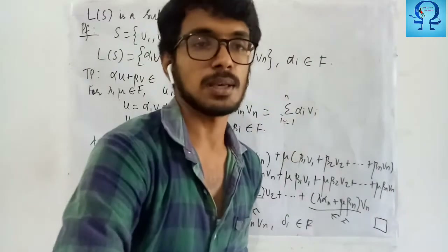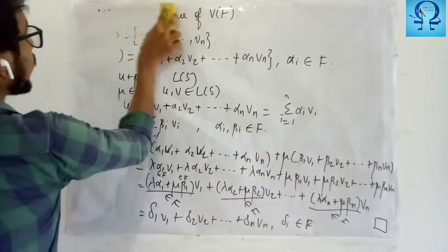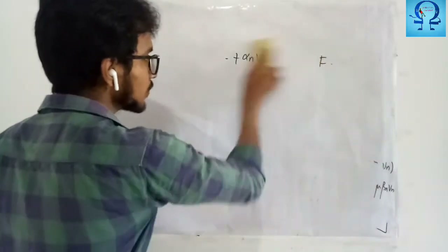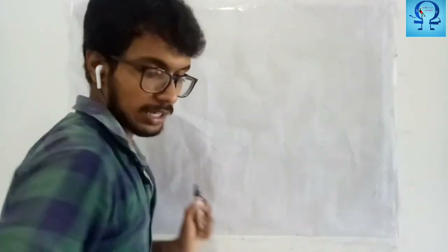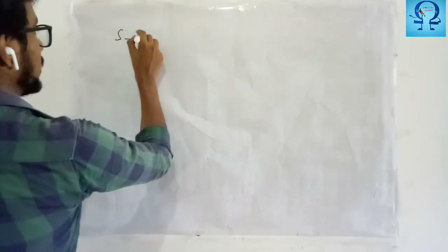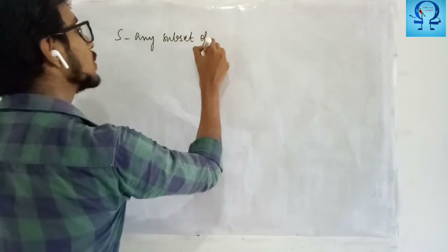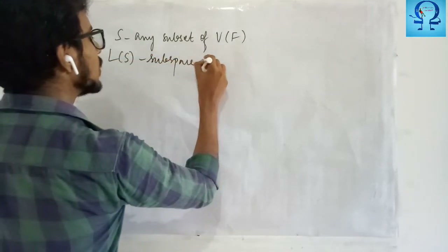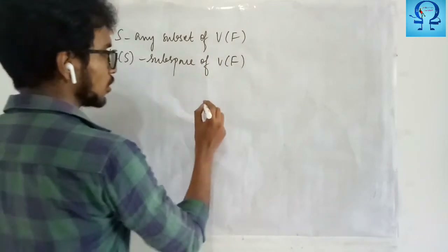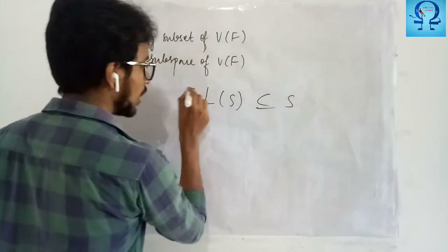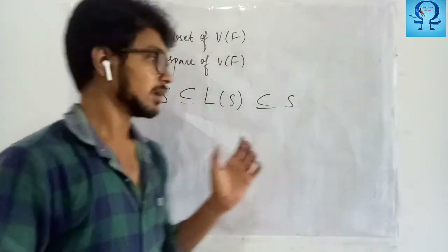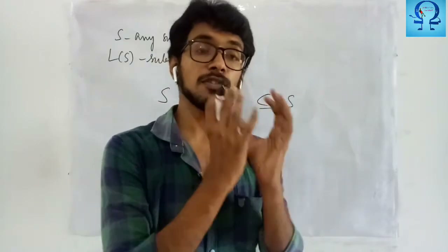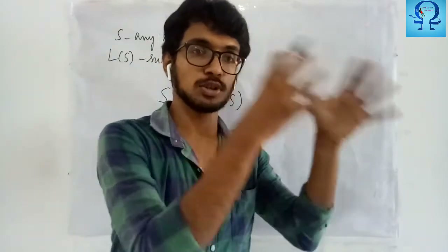This proves L(S) is a subspace of the vector space. Now, what kind of subspace is it relative to the set S? L(S) is formed with the help of any non-empty subset S of the vector space, and L(S) is a subspace. S may be contained in L(S) or L(S) contained in S — which one is true? S is a collection of vectors, and from those vectors you find all possible linear combinations to form L(S).